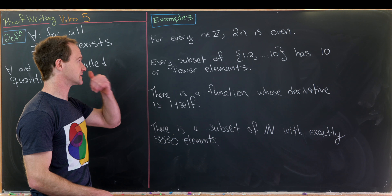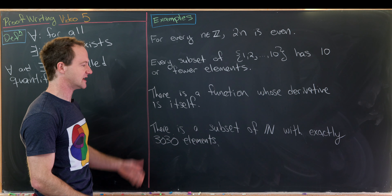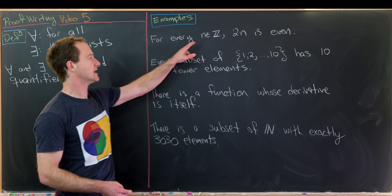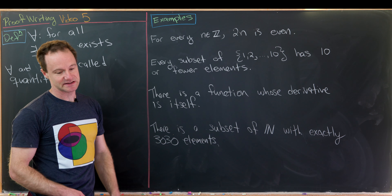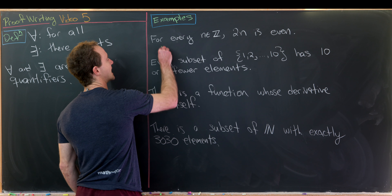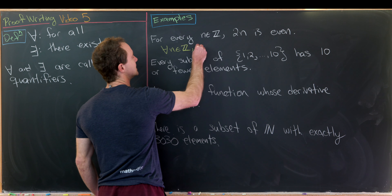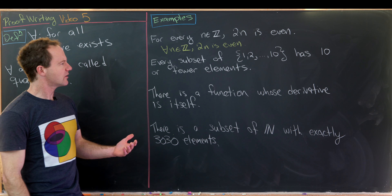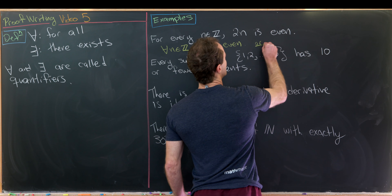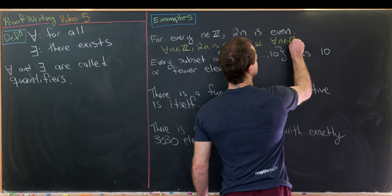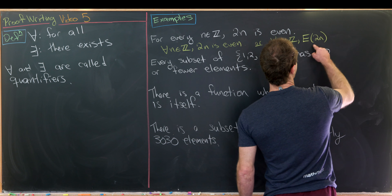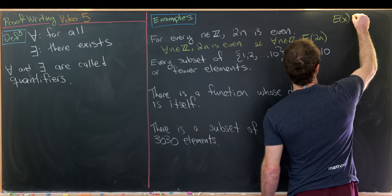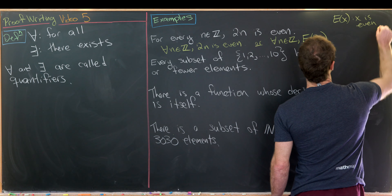Let's translate these mathematical statements into symbolic notation. The first one says: for every integer n, 2n is even. We write that as: for all n in ℤ, 2n is even. Another way is: for all n in ℤ, E(2n), where E(x) is the open sentence 'x is even.'